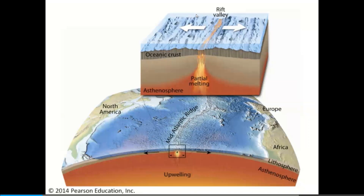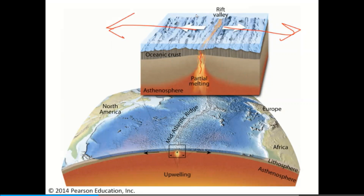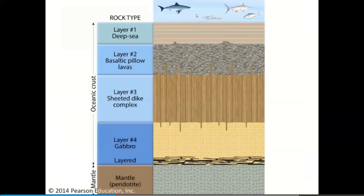Seafloor spreading takes place in the lithospheric gap between two separating tectonic plates — this is what happens at a divergent plate boundary. New oceanic crust and lithospheric mantle are generated in the wake of two plates moving apart. One plate moves to the right, another to the left; partial melting occurs between them, flowing upwards and sealing fresh cracks in the oceanic crust, making new oceanic crust.